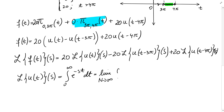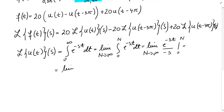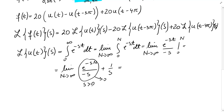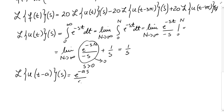Taking the limit as n approaches infinity of the integral from 0 to n of e to the negative s t dt, we get the limit of e to the negative s n over negative s plus 1 over s. This limit approaches 0 when s is greater than 0, so we get 1 over s. In general, the Laplace transform of u of t minus a equals e to the negative a s over s.